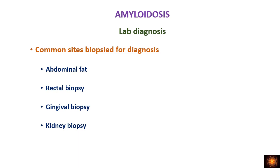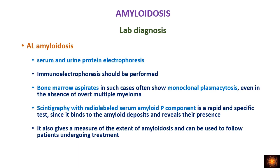The sites commonly used for biopsy to diagnose amyloidosis are: abdominal fat — the easiest to acquire — followed by rectal biopsy, gingival biopsy, and kidney biopsy. These are the normal biopsy sites to demonstrate amyloid deposits. AL amyloidosis can also be diagnosed by serum and urine protein electrophoresis.